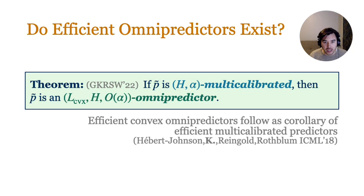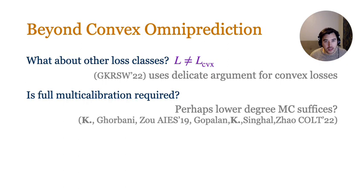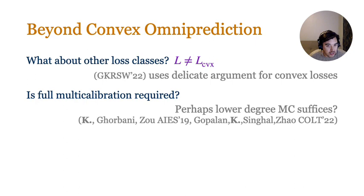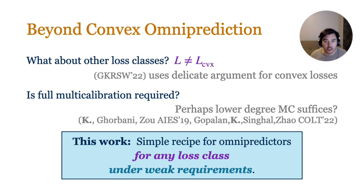This connection reveals a nice result on efficiently constructing omnipredictors, but leaves outstanding questions. First, what about other classes of loss functions — the original work uses an argument tailored to convex losses? Also, is multi-calibration really necessary? Multi-calibration gives omnipredictors whose complexity scales linearly in H but with a large polynomial factor in epsilon. It's reasonable to wonder whether weaker alternatives like multi-accuracy or low-degree multi-calibration suffice for omniprediction as well.